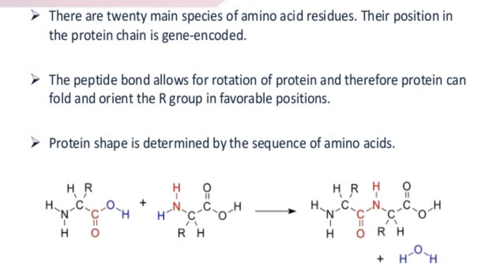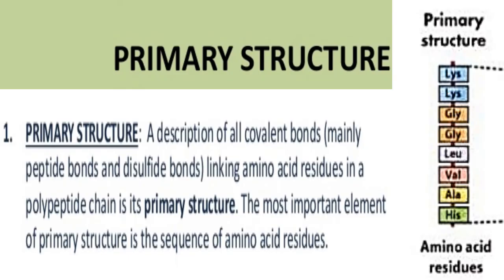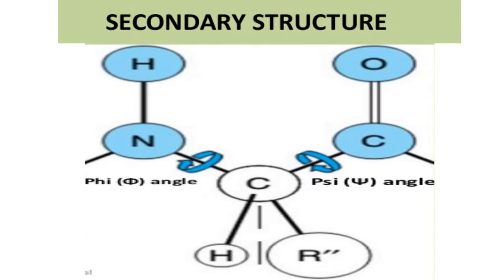Primary structure of protein: a description of all covalent bonds, mainly peptide bonds and disulfide bonds, linking amino acid residues in a polypeptide chain is its primary structure. The most important element of primary structure is the sequence of amino acid residues.